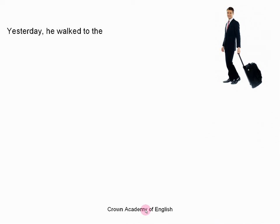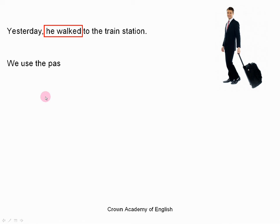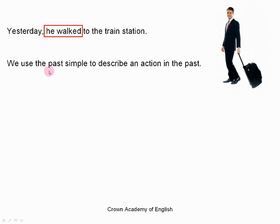Yesterday he walked to the train station. Here is the form of the past simple tense: he walked. So 'he' is the subject and 'walked' is the verb. The general rule is that we use the past simple to describe an action in the past.